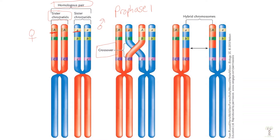If we look at alleles A, B, and C on these homologous chromosomes, when crossing over occurs, A and B are more likely to cross over together because they're closer together compared to A and C or B and C.